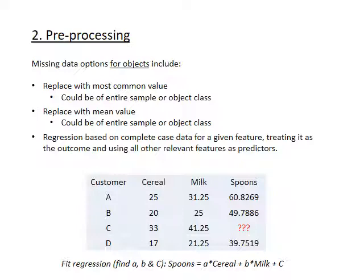We could also perform a simple type of regression — assuming that the number of spoons someone buys is related to the amount of cereal and milk they buy. We could fit a regression relationship: finding the values of little a, little b, and big C (the constant) that best predict the number of spoons for customers A, B, and D. Then, whatever that best-fit model is, we apply it to customer C to make a guess about how many spoons they bought.